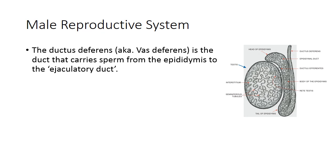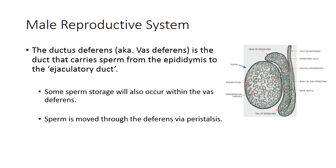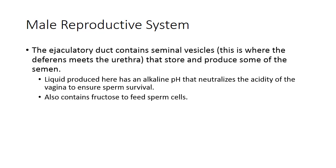The vas deferens is the duct that carries sperm from the epididymis to the ejaculatory duct, and some sperm storage also occurs within the vas deferens in small cavities. Importantly, sperm is moved through the vas deferens via peristalsis — the same wave-like movement that pushes food through the digestive tract — in this case pushing sperm through the deferens.